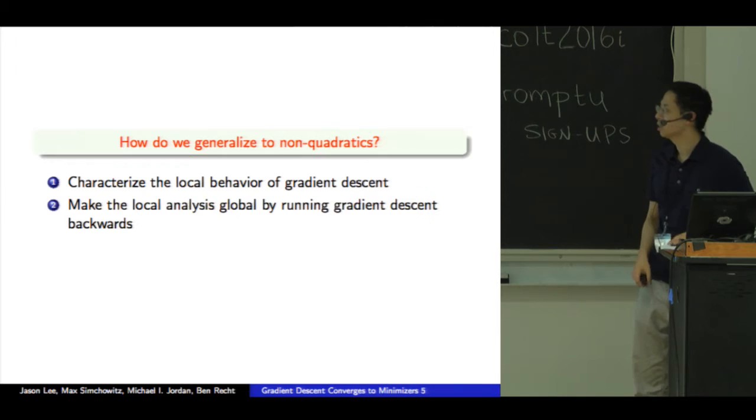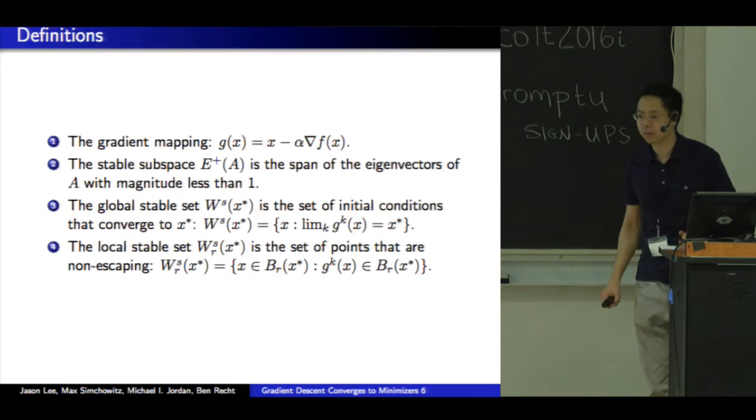The first is to more rigorously characterize a local behavior when it's not quite a quadratic, and instead do something that resembles Taylor approximation. And the second is to make the local analysis global by running gradient descent backwards. So I'm going to define some things. First of all, g is the gradient mapping, so it takes a point x and does one step of gradient descent. And E plus will be the stable subspace of a matrix A. So it's a span of the eigenvectors of A with magnitude less than one.